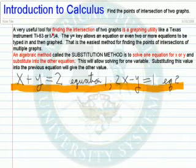Many times in mathematics we need to find the intersection of two graphs. The most convenient method is by using a graphing utility like a Texas Instrument TI-83 or TI-84. There's also software available that will help you find that.